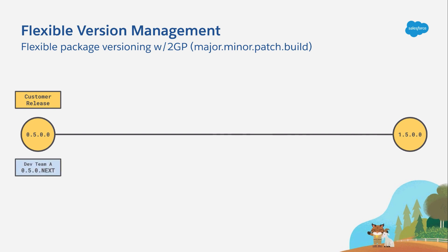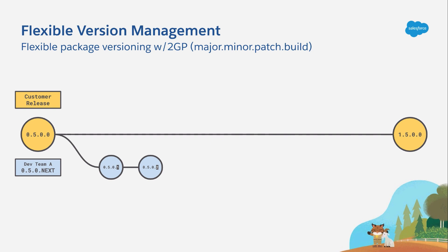Like before, we've got Dev Team A. Only this time, they're going to build out the 0.5.0 line, meaning the only thing changing between package versions is the build number. So their first package is 0.5.0.1 and their second is 0.5.0.2 — they're using that 0.5.0.next syntax. Let's get Dev Team B back in the mix and see how that livens things up.